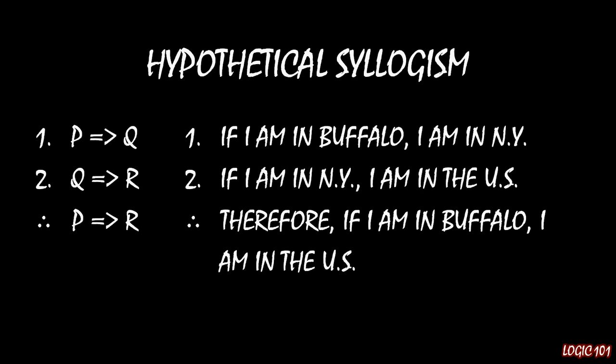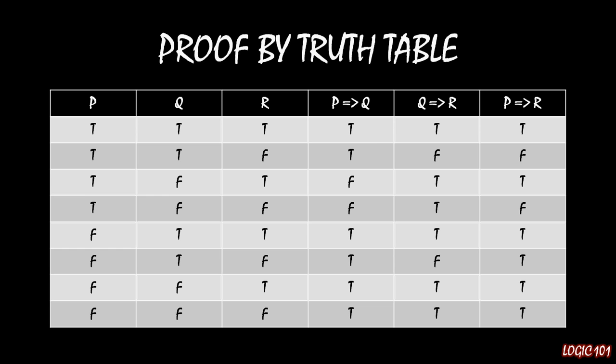We can verify this is true using a truth table. I've already filled it out. We have three simple sentences in the first three columns — P, Q, and R — with all combinations of truth values. Column 4 and column 5 are our premises. Column 4 is true in the top two rows and the bottom four rows: where P is true and Q is true, or where P is false regardless of what Q is.